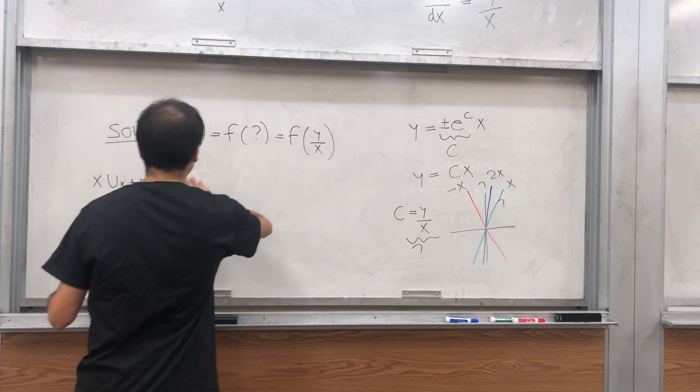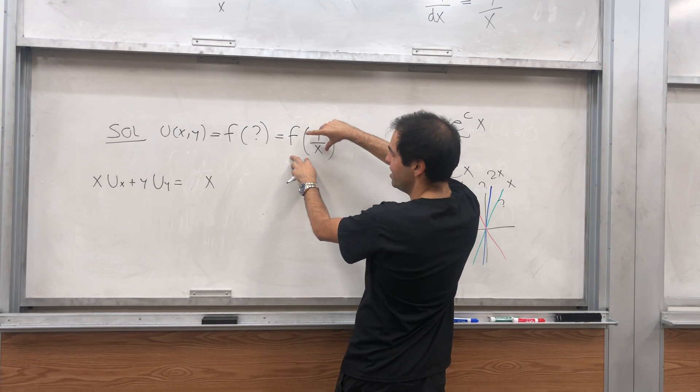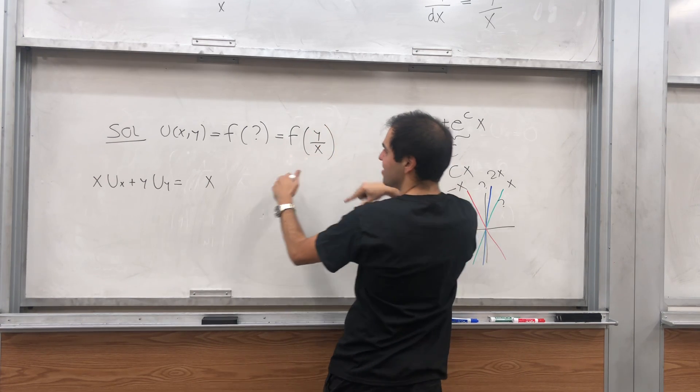So in fact, let's calculate this. So x u_x, so again, differentiate u with respect to x, you get f prime of y over x.